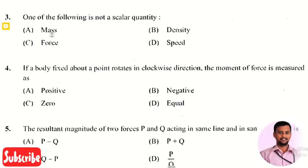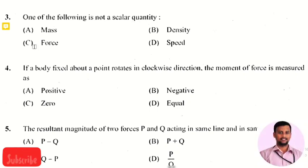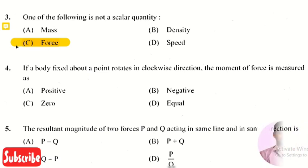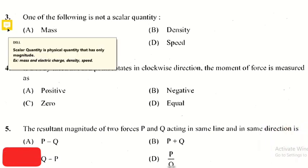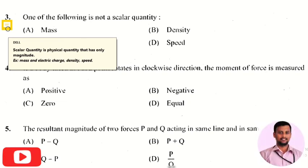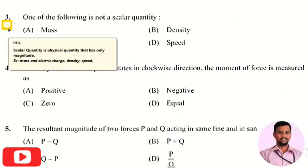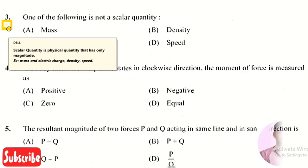The next question: which of the following is not a scalar quantity? The right answer is option 3. A scalar quantity is a physical quantity that has only magnitude — examples include mass, electric charge, density, and speed. Force, however, has both direction and magnitude, so force cannot be a scalar quantity.